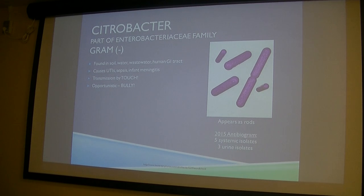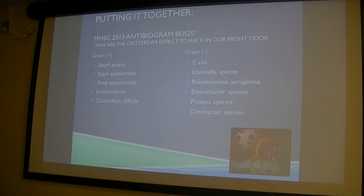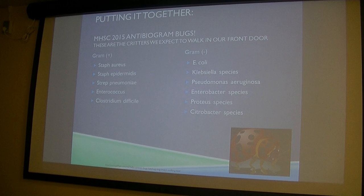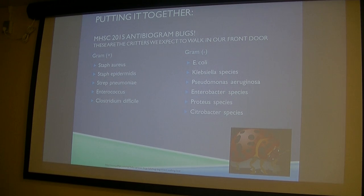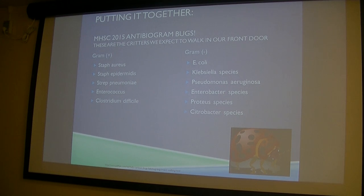Citrobacter had just a few systemic and very few urine isolates. It causes UTIs and some sepsis, and is also associated with infant meningitis. Putting it all together — these eleven organisms are what we expect to walk in our front door almost absolutely positively 95% of the time. The rest barely register. We're not that different from other hospitals.